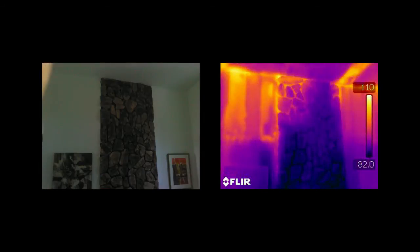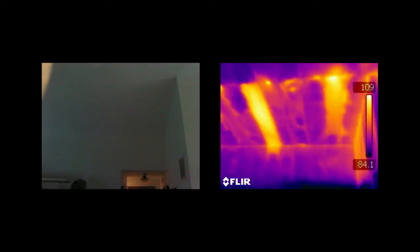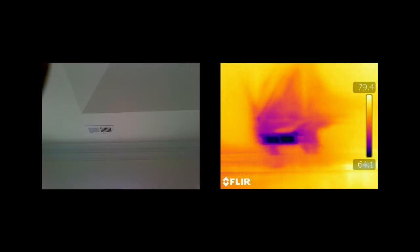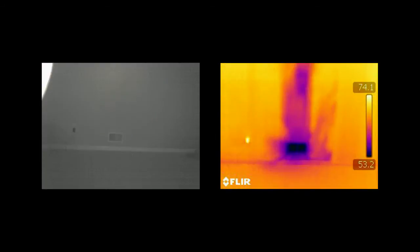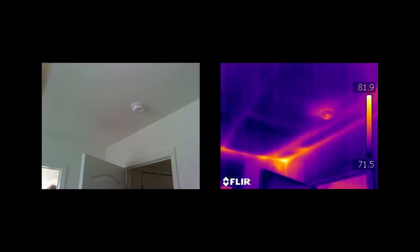Insulation anomalies are common in construction, both new and old. Infrared thermal imaging allows us to effectively scan the home and identify areas that are improperly or incompletely insulated.